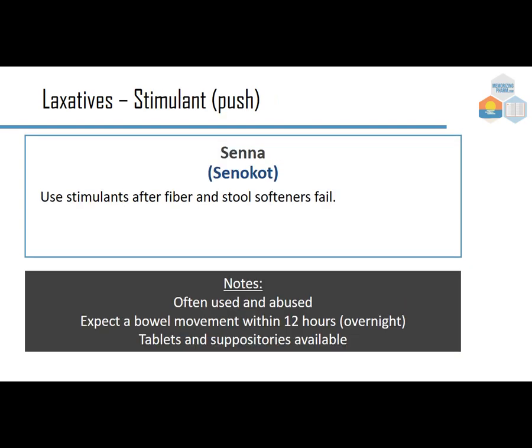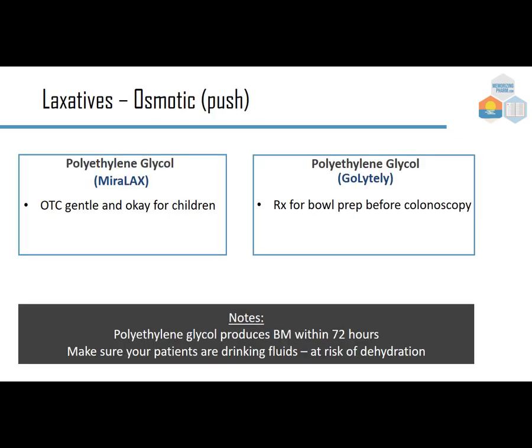Senna is a stimulant laxative used after fiber and stool softeners fail, though it is often overused. Expect a bowel movement within 12 hours or overnight; it's available as tablets or suppositories. For osmotic agents, Miralax (polyethylene glycol) is gentle, OTC, and safe for children, producing a bowel movement within 72 hours. The bowel prep formulation (GoLYTELY) works very quickly — patients must stay near a toilet and maintain fluid intake to avoid dehydration.